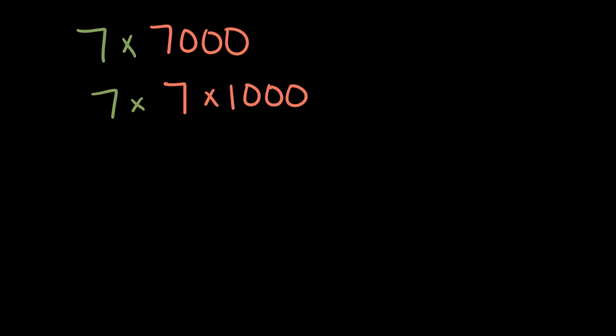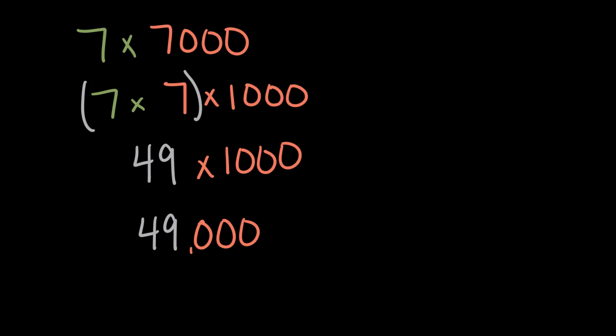And again, we can multiply our single digits first, our one-digit numbers. Seven times seven is 49. And then 49 times 1,000 is going to be 49,000, which we can write as 49. And this time, maybe the pattern's becoming clear, we're going to have three zeros on the end. So it'll be a 49 with three zeros, or 49,000.